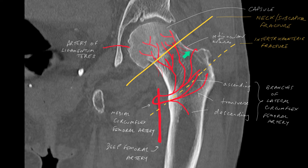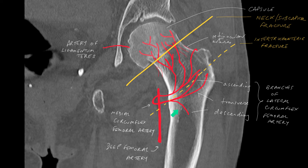and also the retinacular arteries. The lateral circumflex artery produces an ascending, a transverse, and a descending branch, which supply the area at the intertrochanteric line and below.